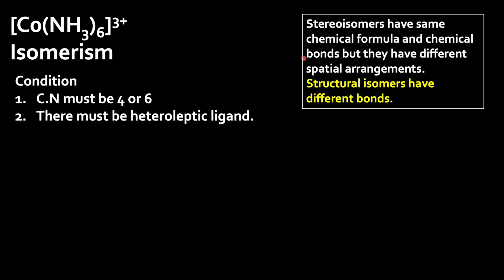For coordination complexes, there are two kinds of isomers: stereoisomers, which have the same chemical formula and bonds but different spatial arrangement, and structural isomers, which have different bonds. For isomerism to occur, the coordination number must be 4 or 6, and there must be heteroleptic ligands — meaning different kinds of ligands. Here the coordination number is 6, but we have only NH3 (homoleptic ligands), so isomerism is not possible for this complex.